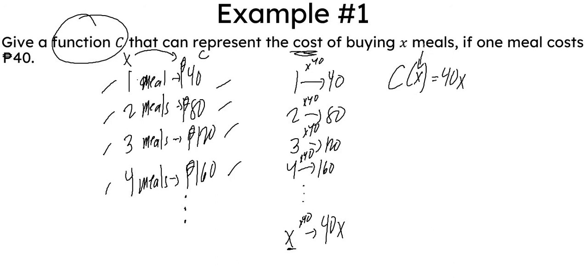Therefore, the function c that I can give is that the c(x), which is 40x. Meaning, if I input x, which is the number of meals, the function will be multiply, or the relationship rather, will be multiply x by 40. And we represent it this way. So therefore, our function c(x) = 40x.